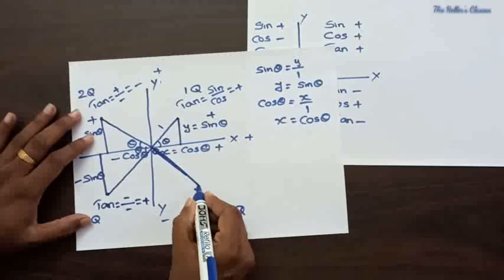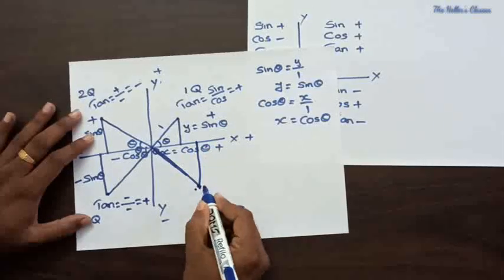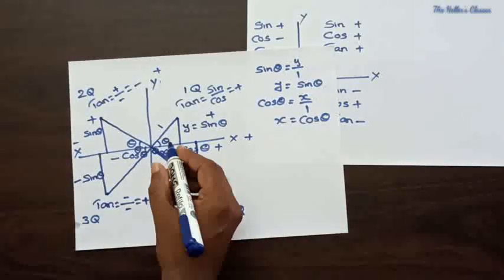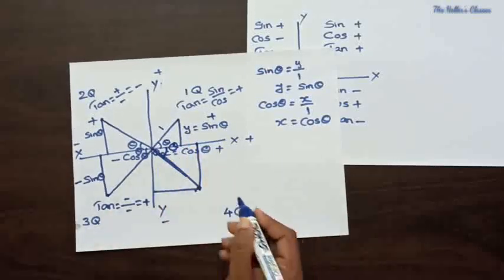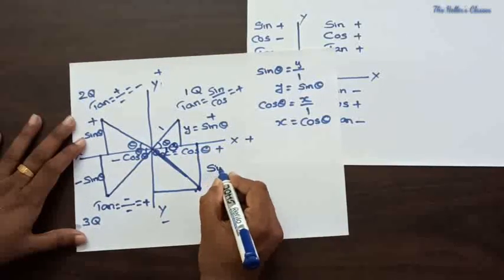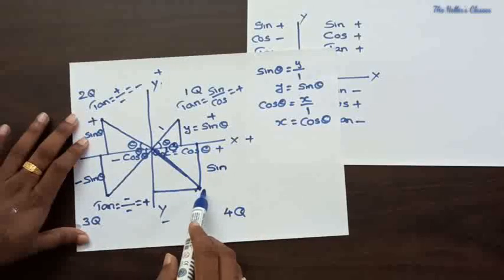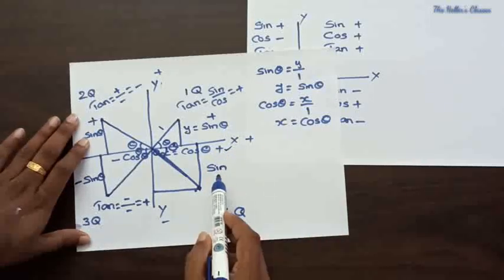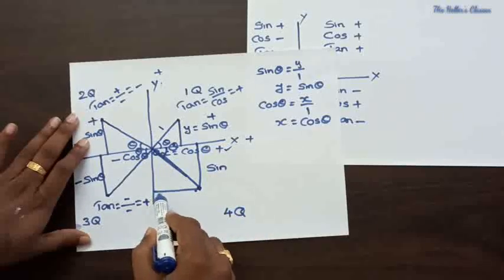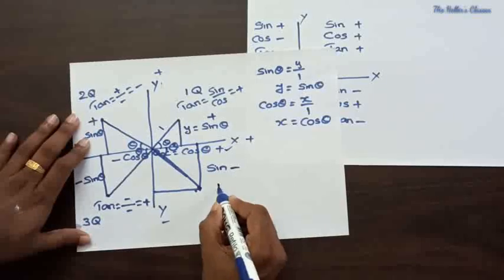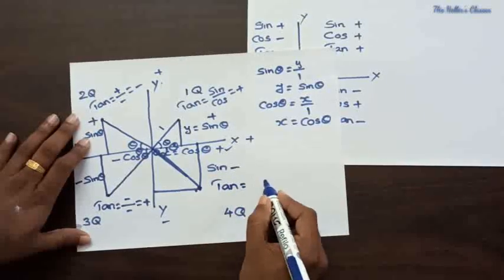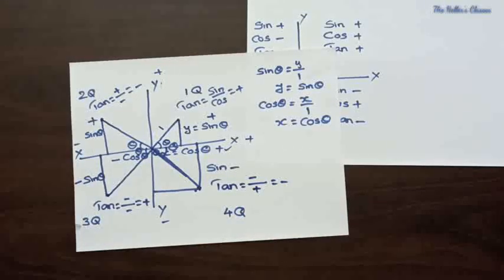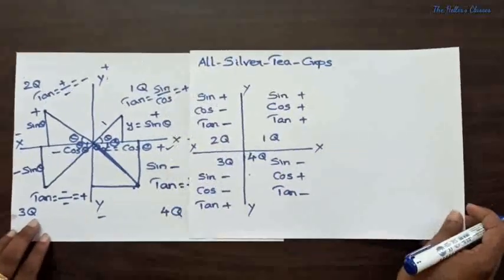In the fourth quadrant, joining the origin to the moving point, the horizontal distance — cos — is moving in the positive direction only, so cos is positive. The vertical distance — sine — is moving in the negative y direction, so sine is negative. For tan, which is sine by cos, minus divided by plus gives a negative value — so tan is negative in the fourth quadrant.